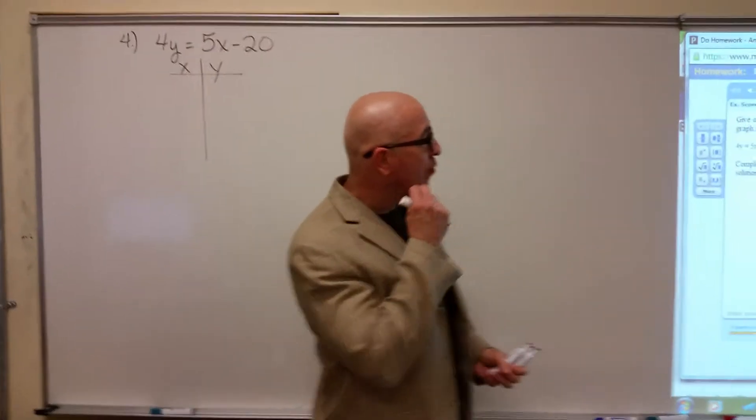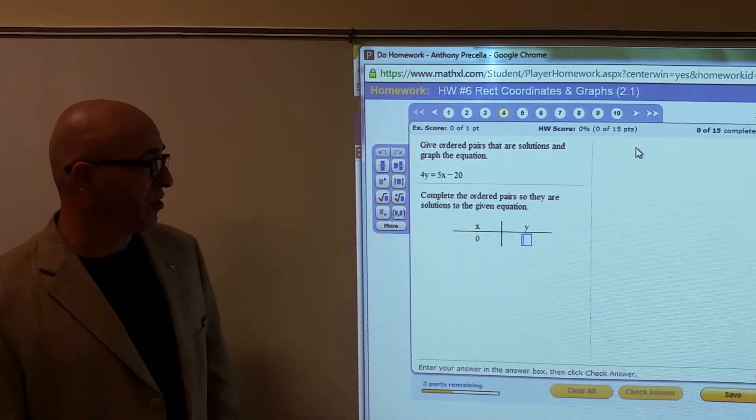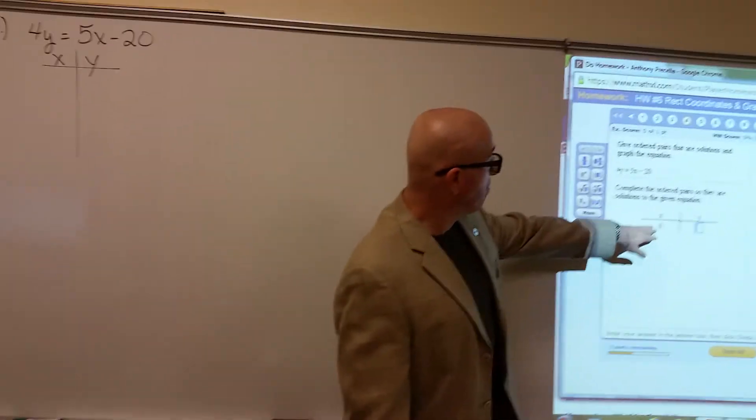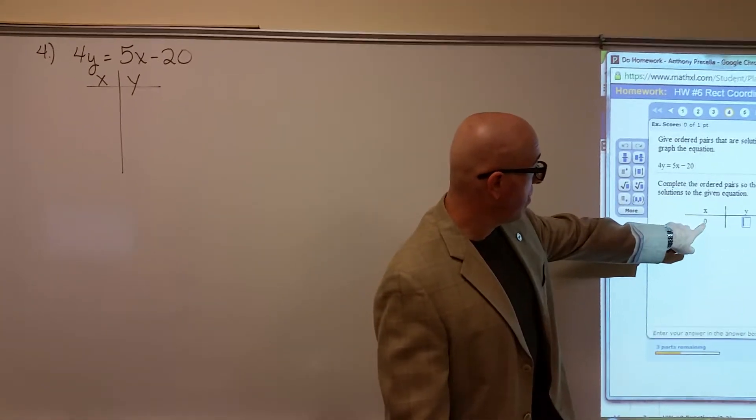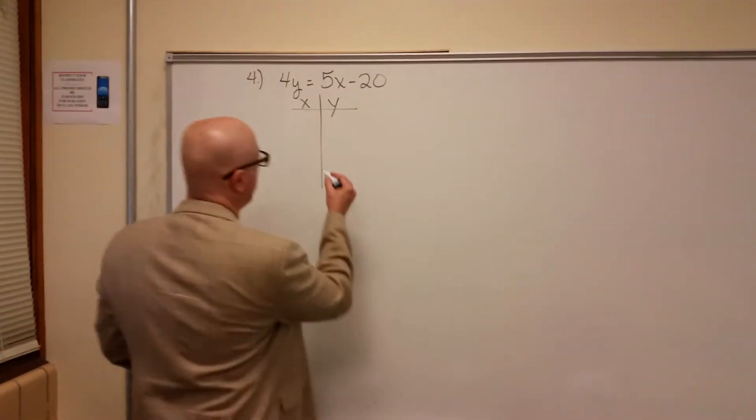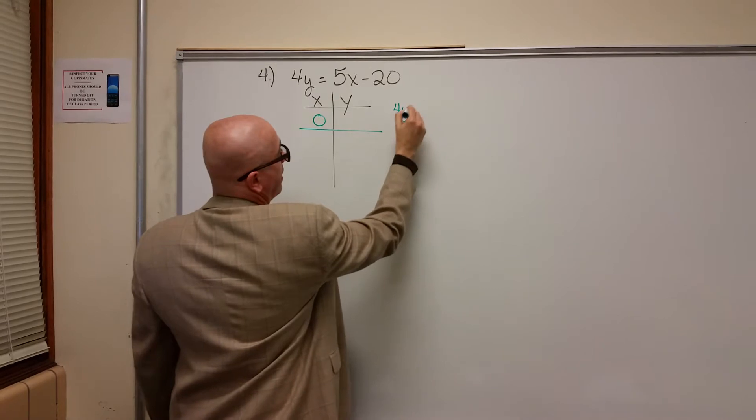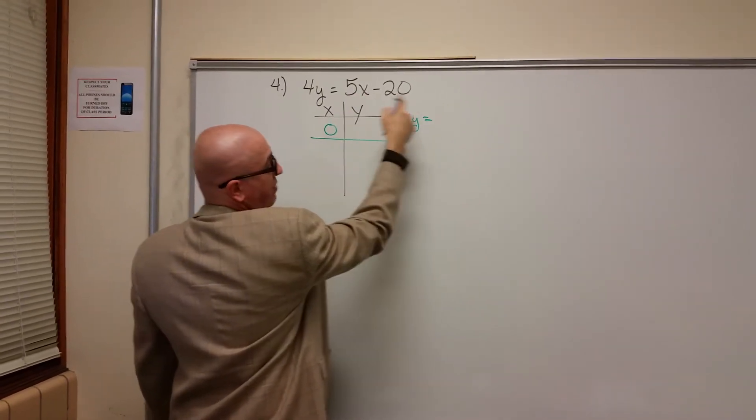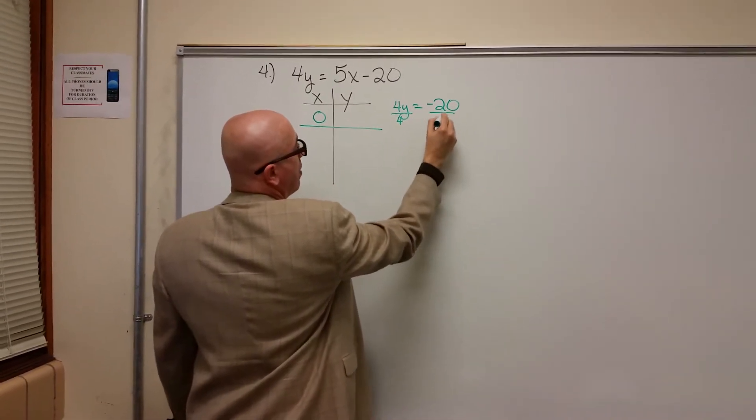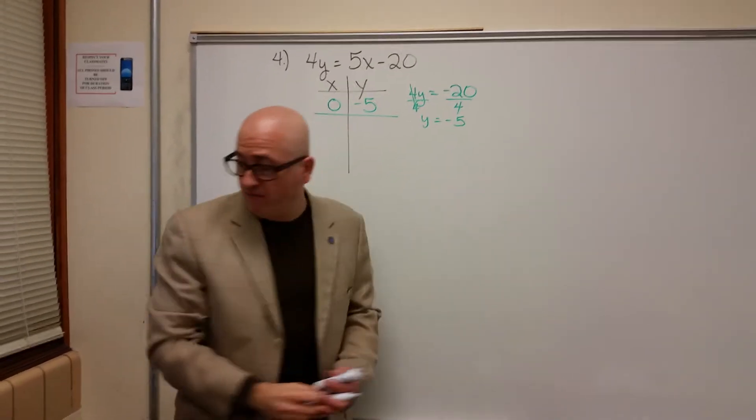So here's our first equation we're going to graph. It says give ordered pairs that are solutions and graph the equation. This is something all of you have done before. We're going to be given numbers that you plug in. Here it says plug a zero in for x, figure out y. If you plug a zero in for x, we'd have 4y equals 5 times 0 minus 20, which is negative 20. Divide by 4 and we'll get y equals negative 5. So punch in negative 5.